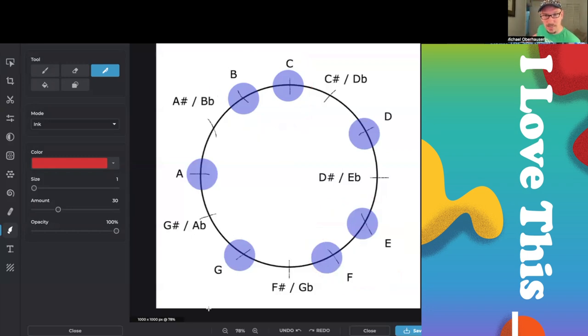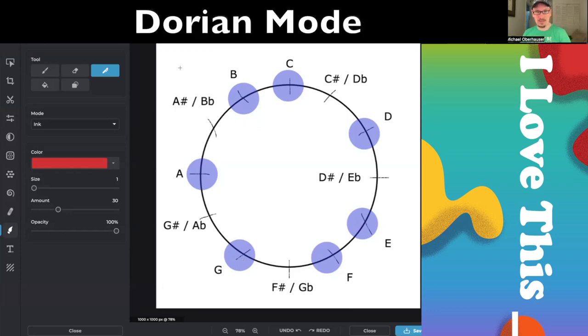So we talked about starting in other places. What happens when we do start on D and go D, E, F, G, A, B, C, D? It doesn't have that key defining tritone anymore, but we can still make it sound like home. This is what's known as a mode. This pattern of whole steps and half steps, that's the same pattern as the major scale just starting on the second pitch. So we've got whole, half, whole, whole, whole, half, whole, to create the Dorian mode.